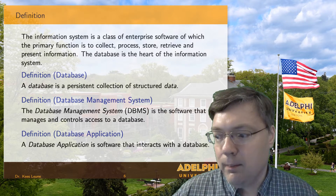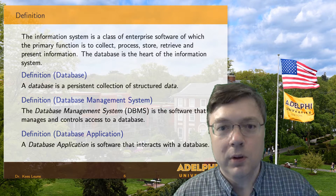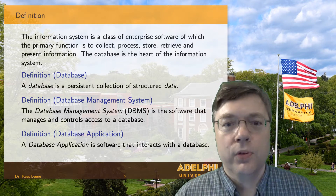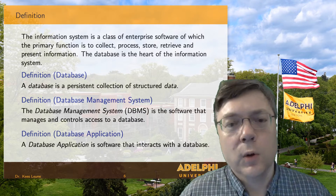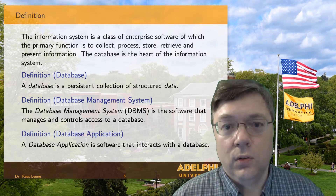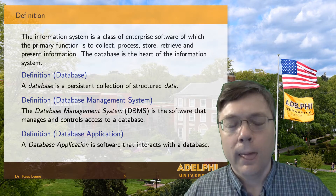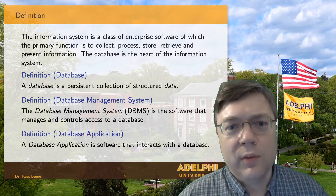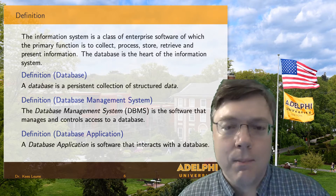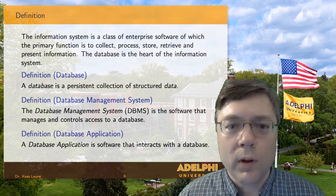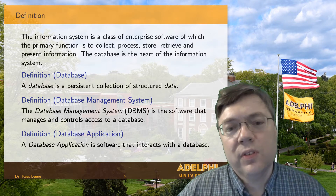That sounds like a simple definition, but there are quite a few elements in there. First, we talk about persistence — we want to put stuff in our database, come back to it at some point in the future, and unless we've touched it ourselves, that data should still be there exactly as we left it. We don't want to worry about computer reboots, power outages, or disk failures. When we leave data behind and go somewhere, we expect that data to be waiting for us when we come back.